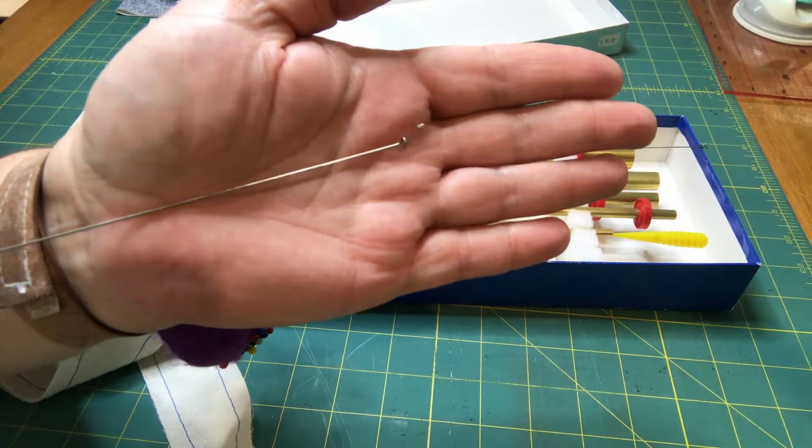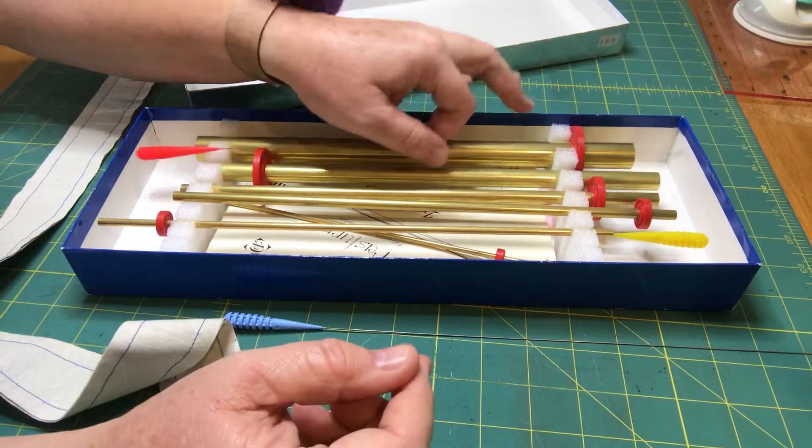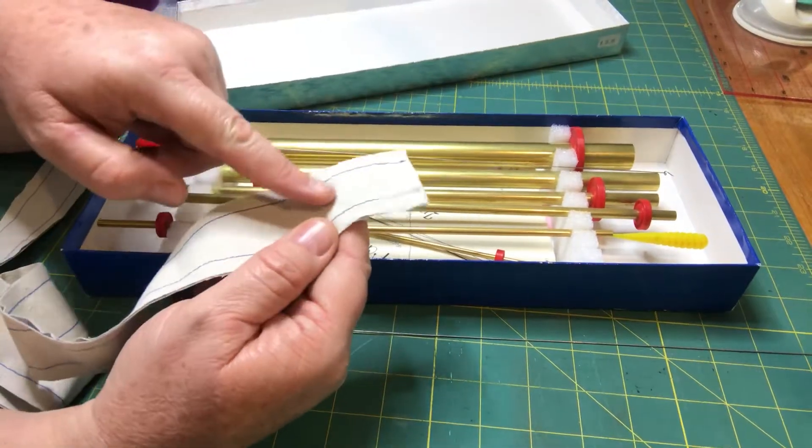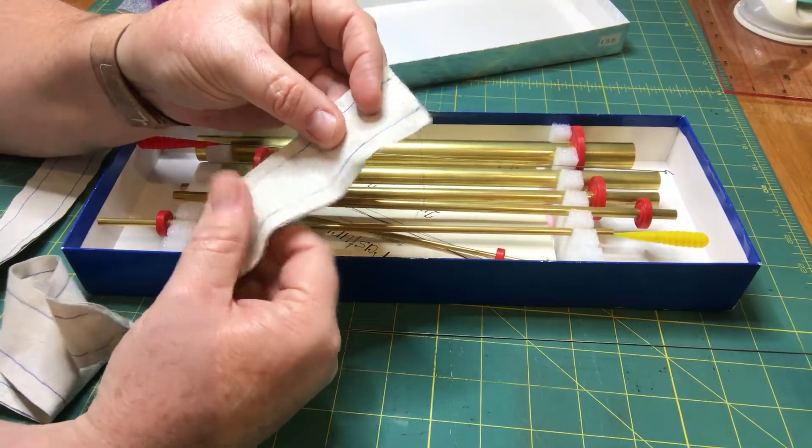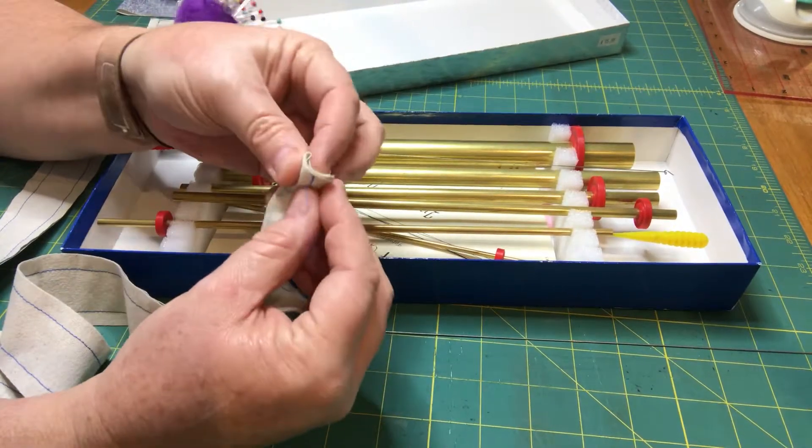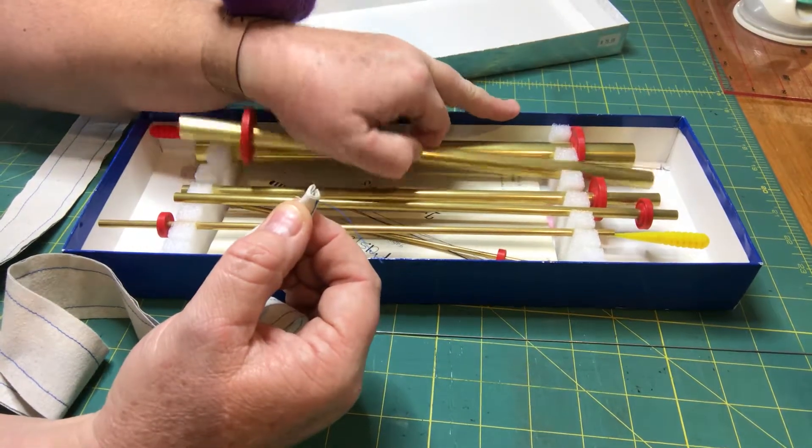So the first thing that you need to do is pick a tube. The tube has to fit not only in the cavity of your fabric tube, the fabric tube needs to fit inside the cavity of the turning tube.